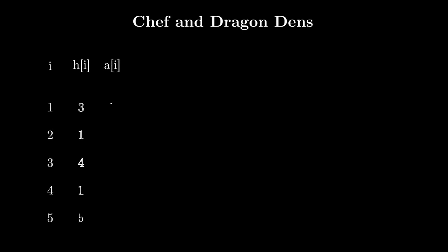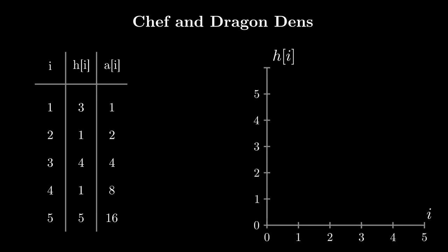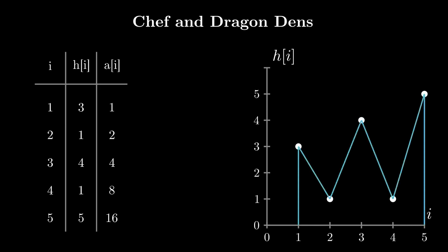In this problem, we're given n points separated by one unit each, with each point having a certain height denoted by h[i] and a value denoted by a[i]. If we were to plot the n points on a graph with i on the x-axis and h[i] on the y-axis, and connect points i and i+1 for all i between 1 and n-1, the part underneath the figure formed touching the x-axis will be called the solid portion of our graph.